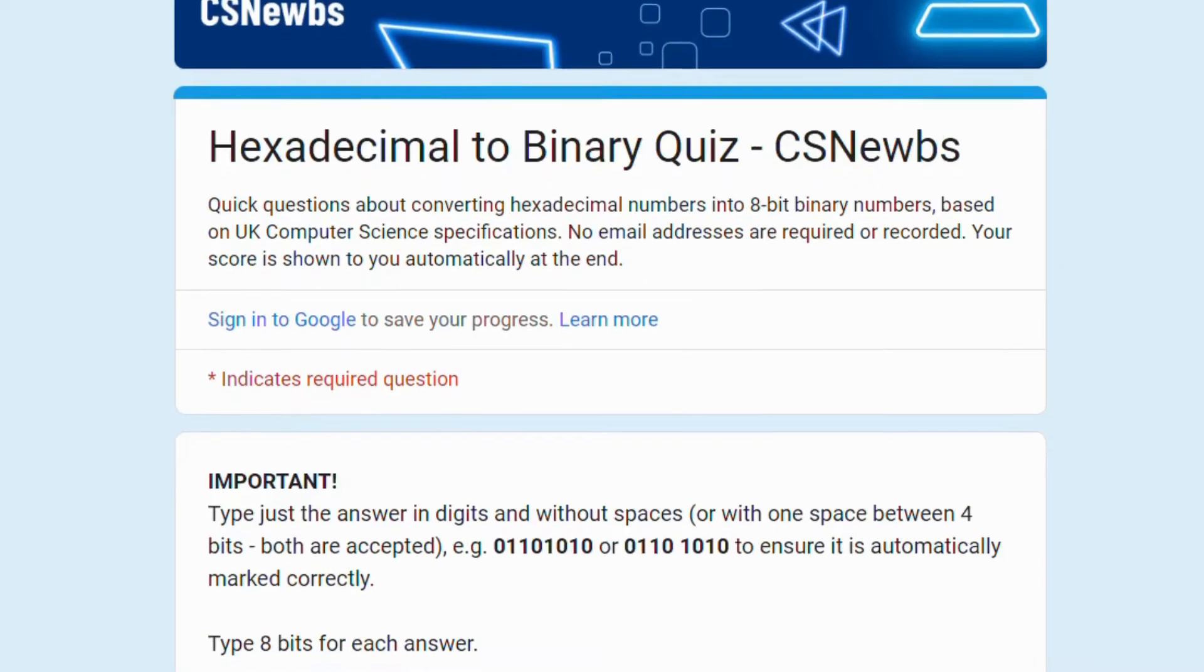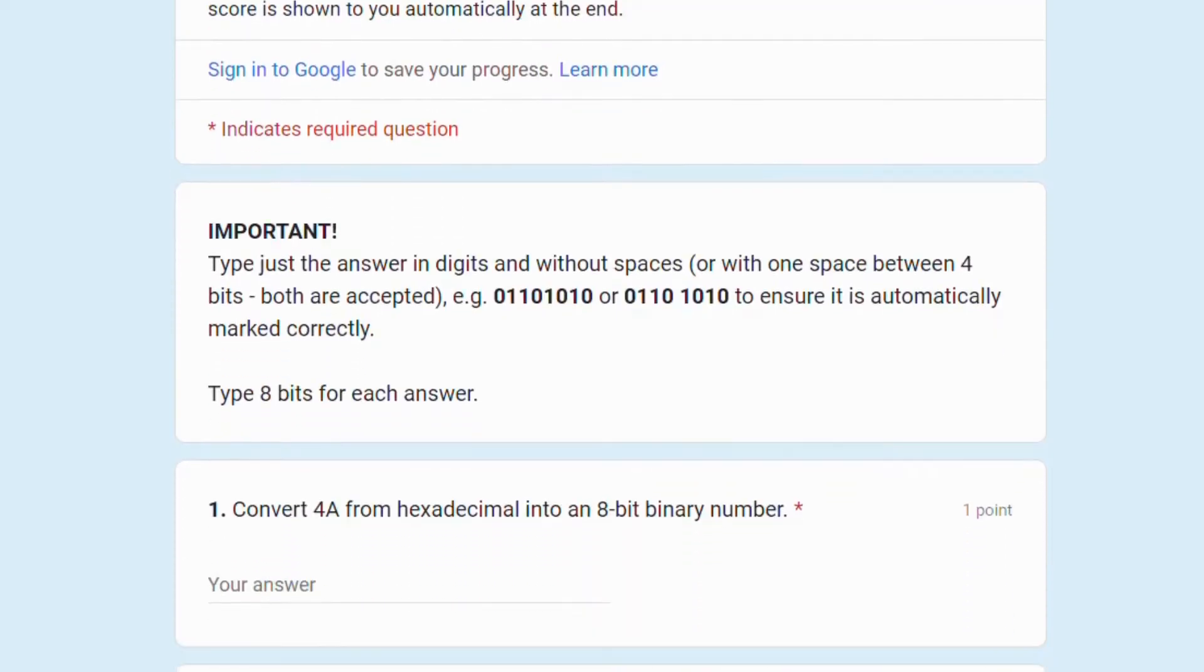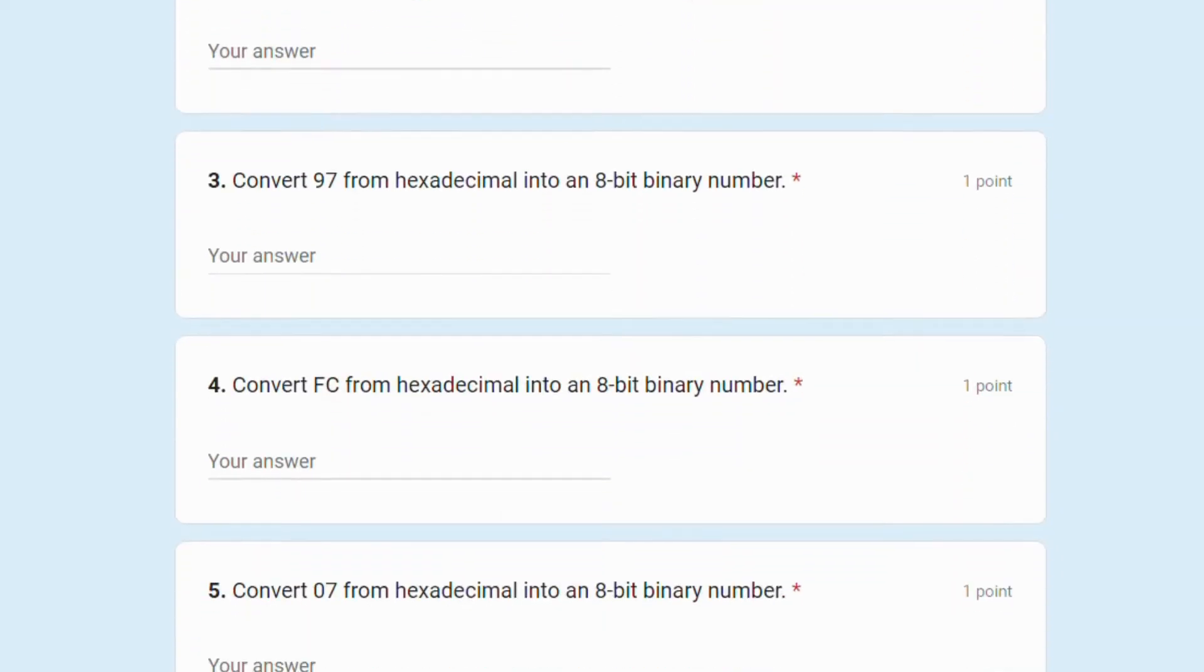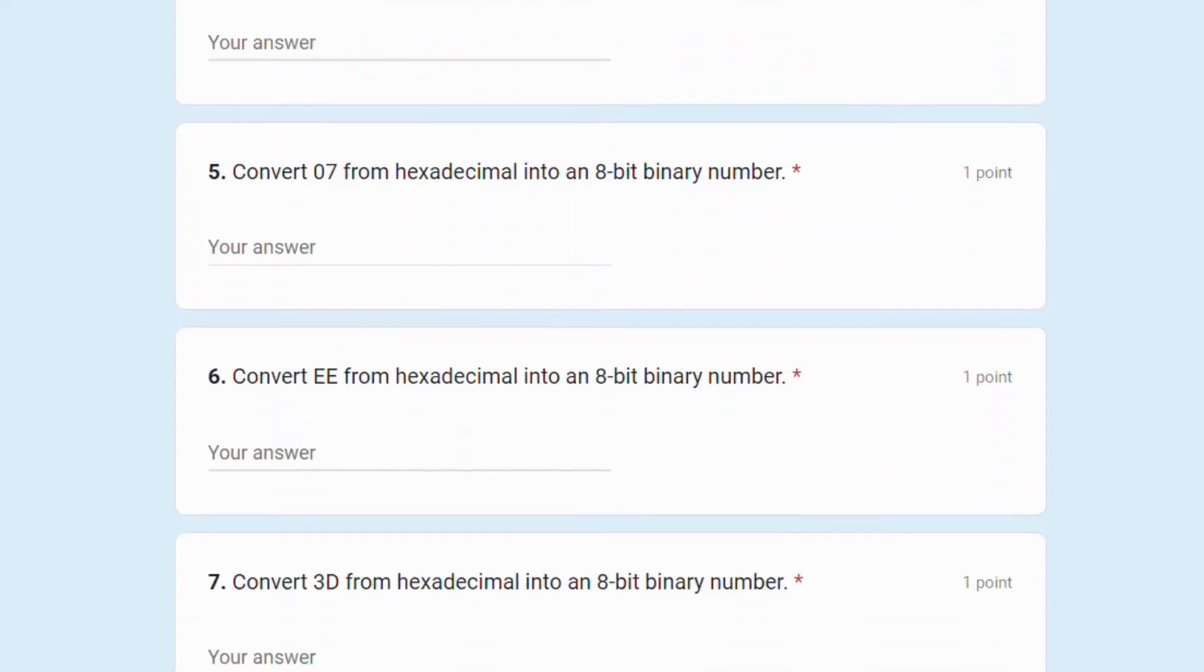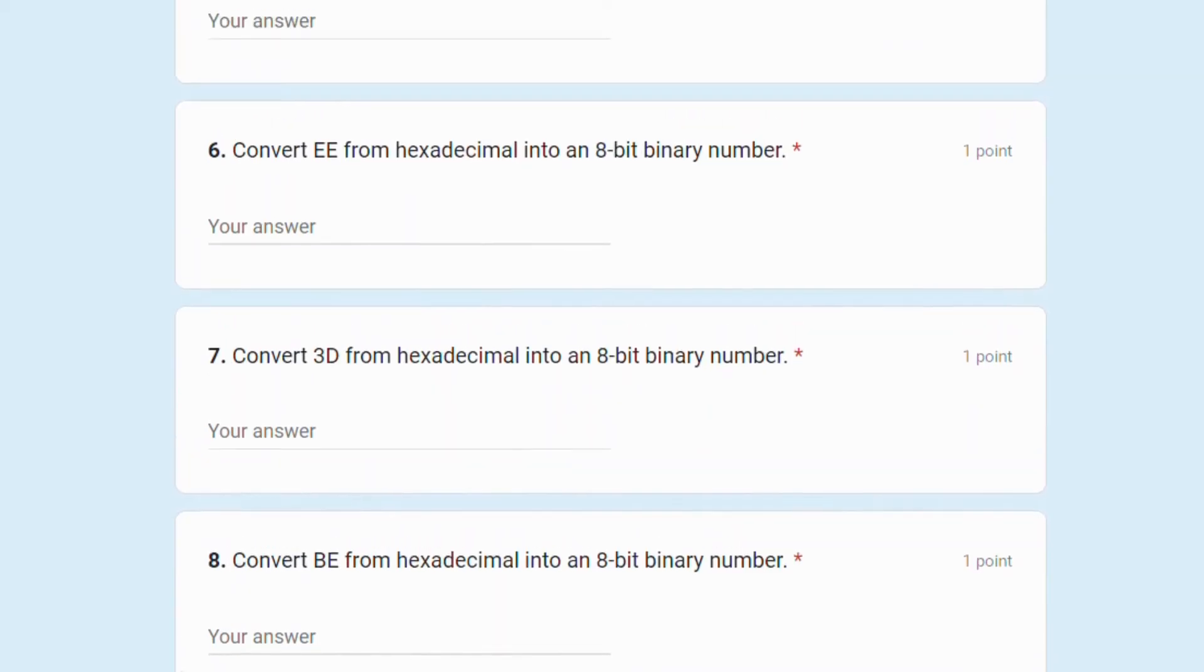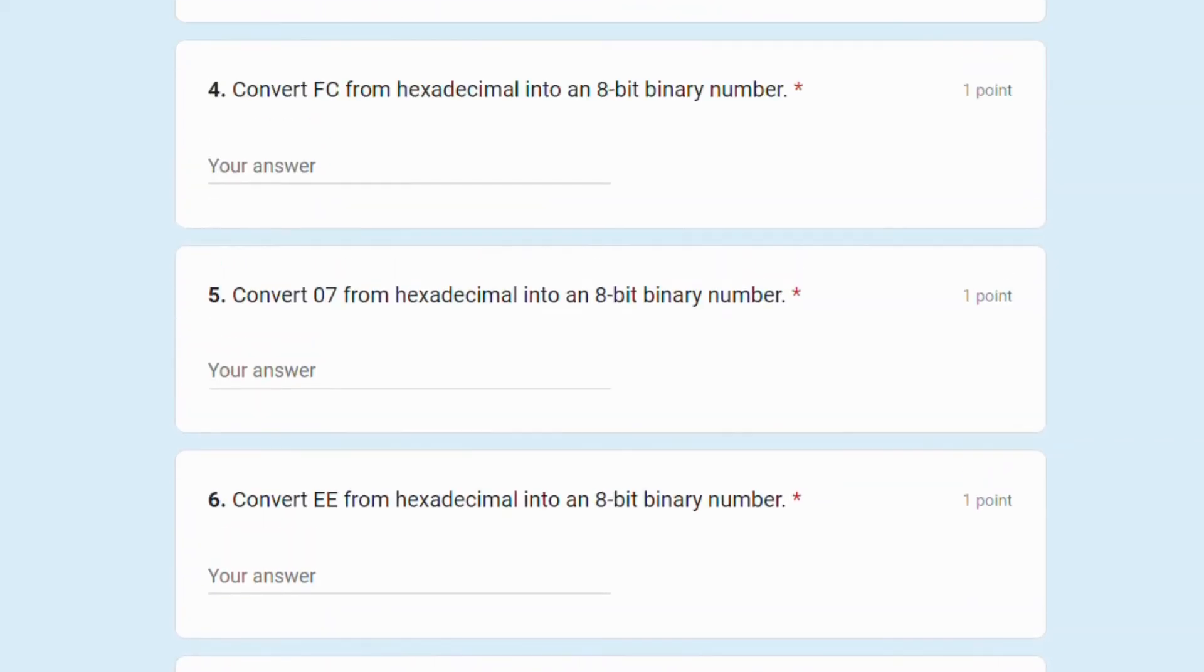In this video's description, as well as at the bottom of the relevant CS Noobs pages, you can find a link to a Google form to test you on your understanding of converting hexadecimal into binary. Type your answer in 8 bits, with or without a single space between the 2 bits of 4. The form will mark it automatically and provide feedback for any answers that you got incorrect.